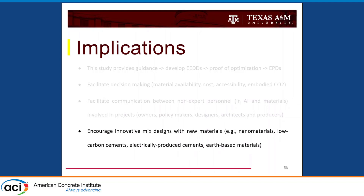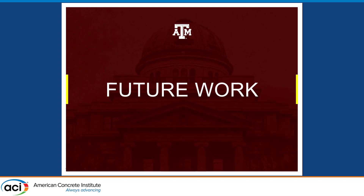This approach would also encourage innovative mix designs with new materials. We currently have many different nanomaterials, low-carbon cements, and electrically produced cements being patented and scaling up from lab to ton-scale production. Once these materials enter the market, you won't have the 2,000–3,000 data points typically needed for traditional AI modeling. This strategy lets you quickly estimate how to achieve a good mix with few experimental runs for new materials where historical data simply doesn't exist.